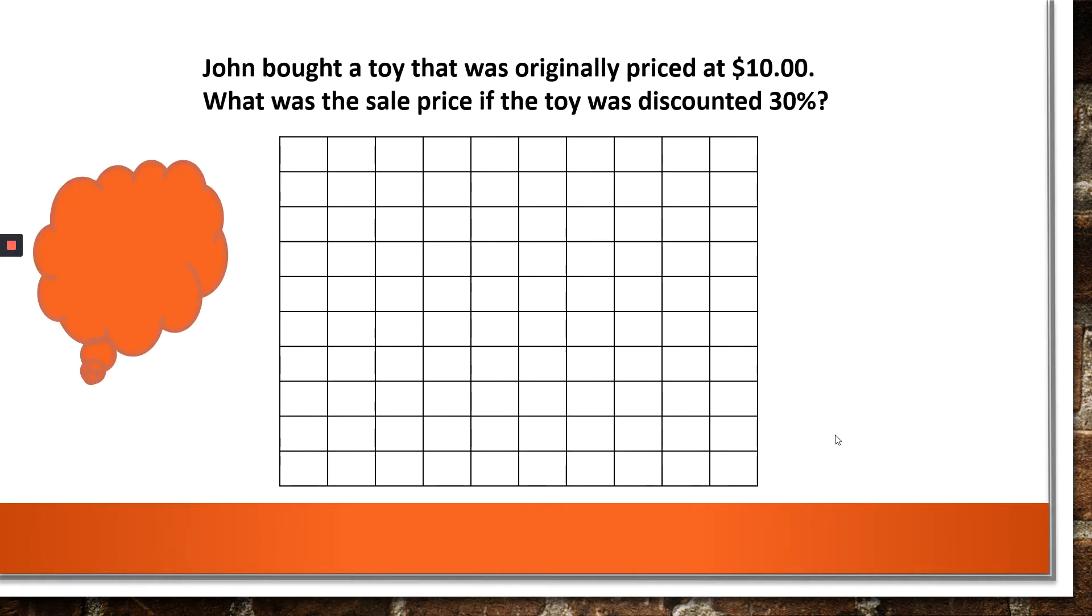Now let's go and kick it up a notch. If you notice, I put a think cloud to the left. In that think cloud, I will put what you would want to put in your calculator if you are using one. John bought a toy that was originally priced at $10. What was the sale price if the toy was discounted 30 percent? Well, the whole is $10. $10 into 100 boxes. So 10 divided by 100 is, if you used your calculator or if you just used your brain, you get 10 cents. So there's 10 cents in every box.